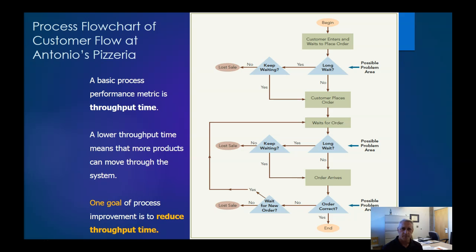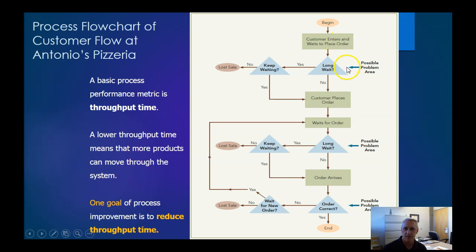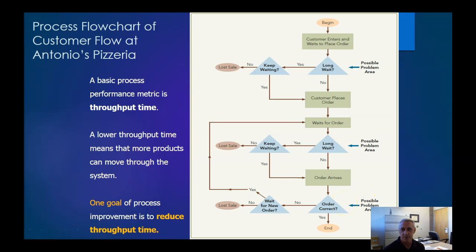A key goal is shortening the time the customer has to wait — reducing throughput time. If we look at a process flowchart from the customer's perspective: if they have a long wait, we may lose the sale — they get upset and leave. Or they keep waiting and place an order, then wait again for fulfillment. Or we get the order incorrect. These are potential problem areas. By designing flowcharts with decision points, we can identify which processes to modify or optimize.